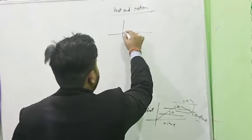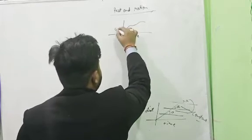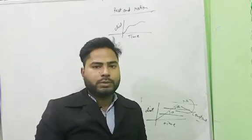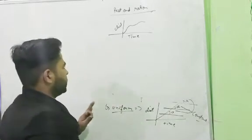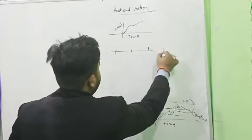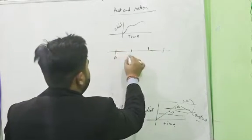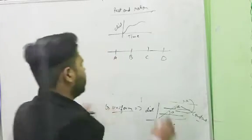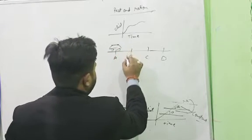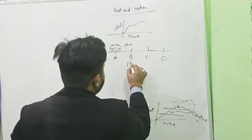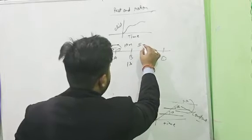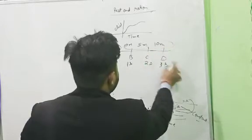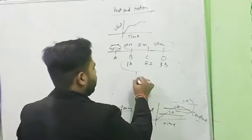In non-uniform motion, the graph is a curved line. The body covers unequal distances in equal intervals of time. For example, a car covers 10 meters in one second, then 5 meters in the next second, then 10 meters in the following second — unequal distances in equal intervals of time.